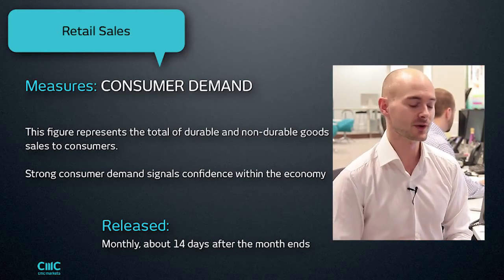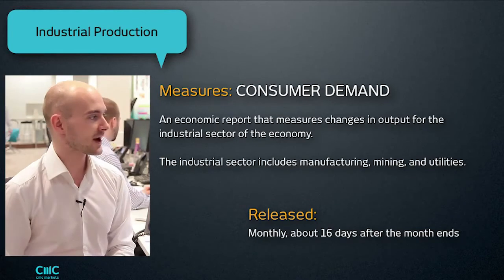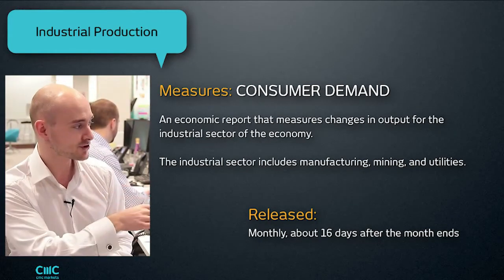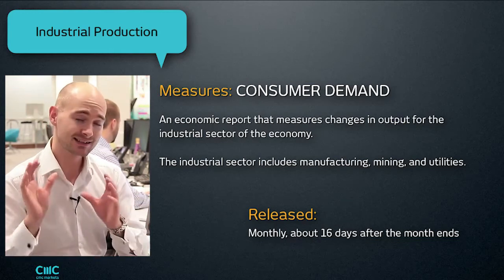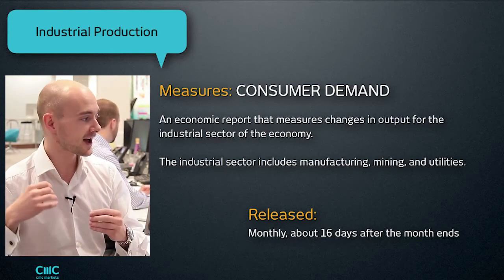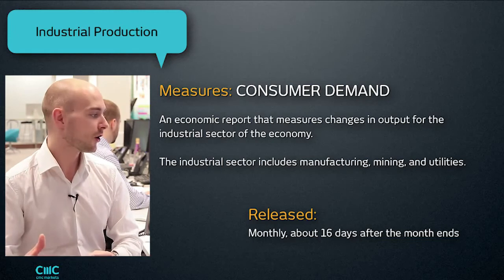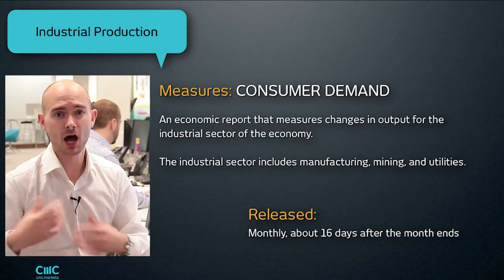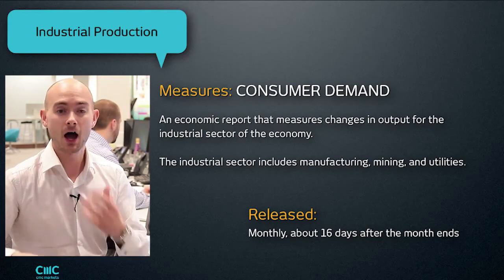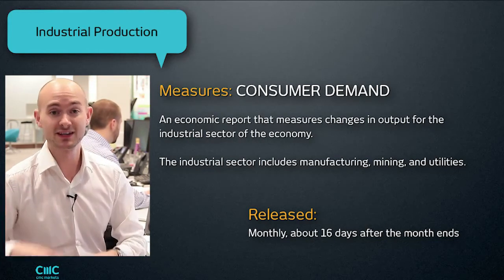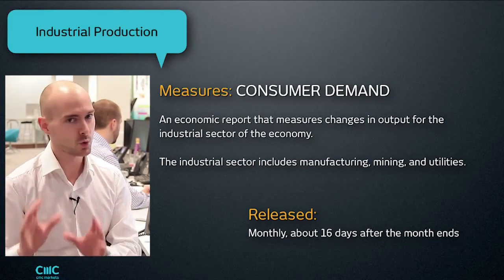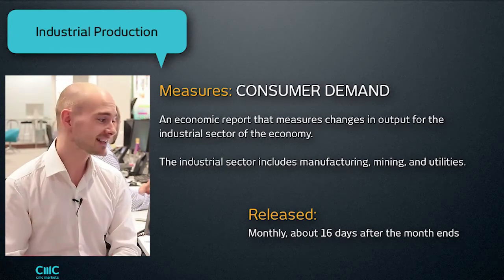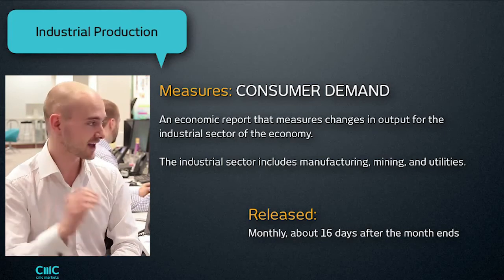The next one is industrial production. This is quite important because it measures consumer demand and gives a broad measure of the output of the industrial sector of a particular economy. How is industry doing? How many products are they producing — is that going up or down? It's a fairly broad measure of a particular economy and is released monthly about 16 days after the month ends.